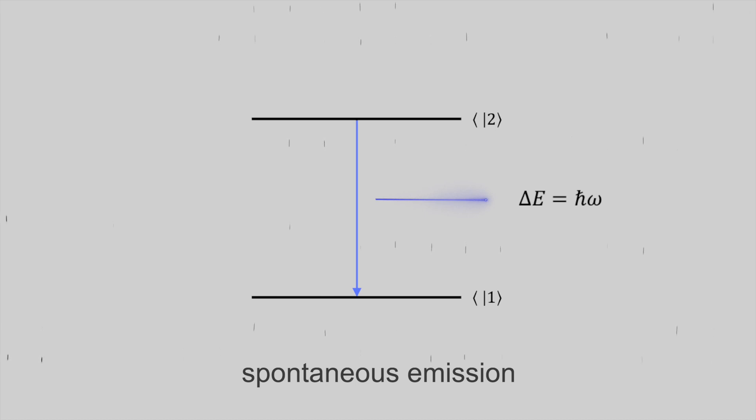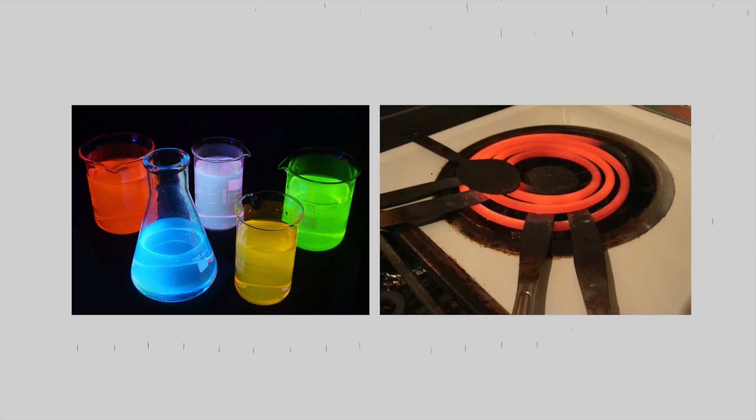This is the second possibility. The phase and direction associated with the photon that is emitted is completely random. And this is basically how fluorescence and thermal emission of light work.